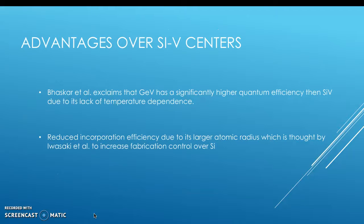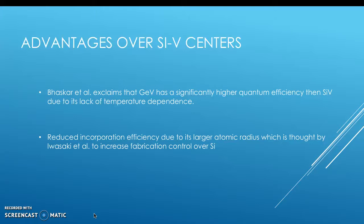The advantages over silicon vacancies are, as Bhaskar puts it, a significantly higher quantum efficiency than silicon vacancies due to its lack of temperature dependence. There is also an increase in fabrication control due to reduced incorporation efficiency, which Iwasaki credits to the larger atomic radius of germanium compared to silicon.